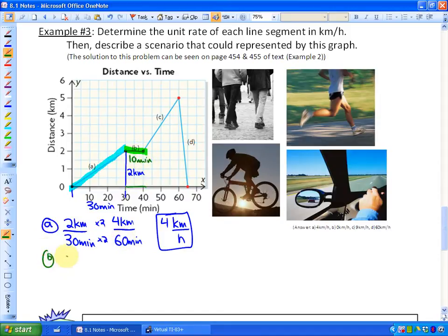So it's 10 minutes but he traveled no kilometers. So he traveled no kilometers in 10 minutes. And how fast is that as a rate? That's zero kilometers per hour.